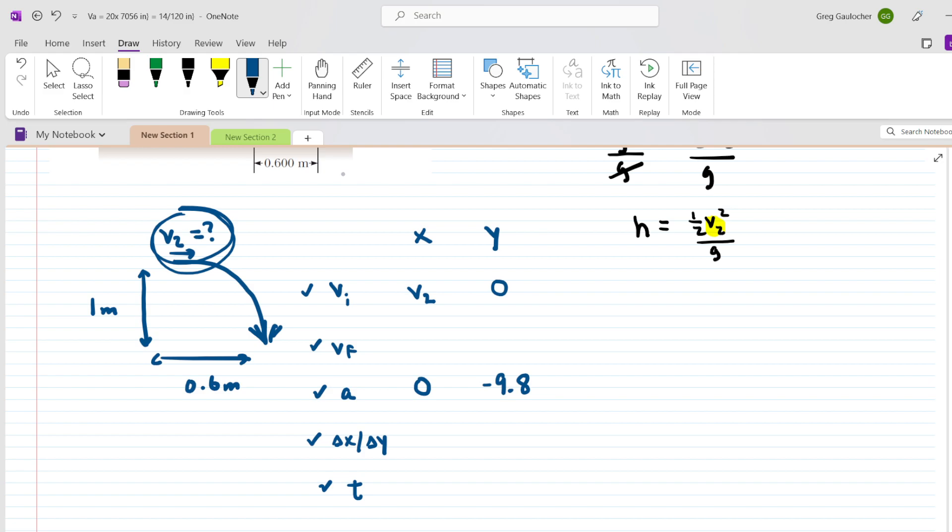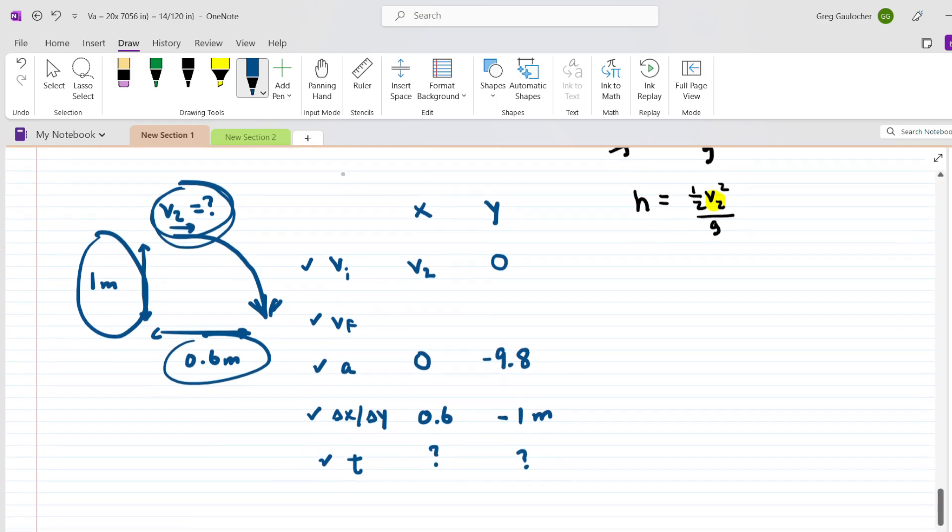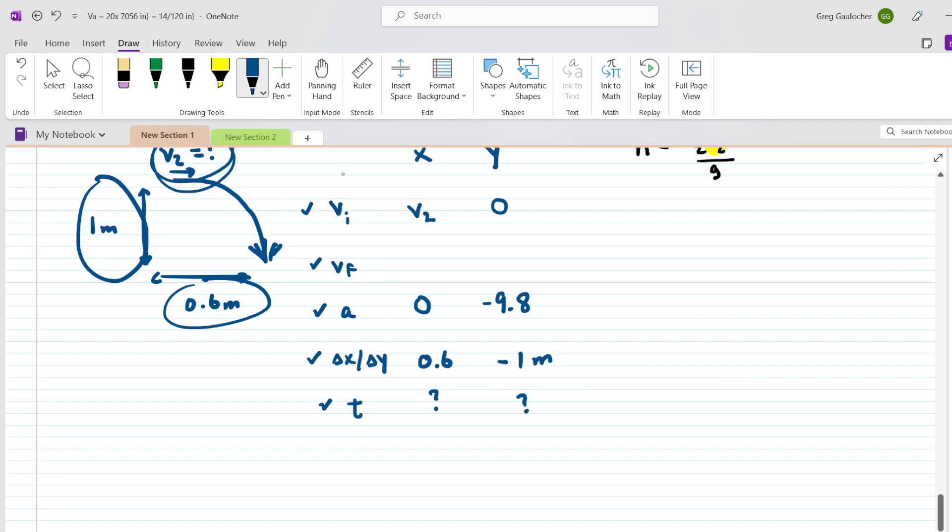Looking at the diagram, the horizontal displacement is illustrated as 0.6 meters. And the vertical displacement is negative 1 meter. Notice we're saying it's negative because vertically, the water is moving in the downward direction. Now, we do not know the time in either direction, but we're actually going to be able to figure that out.